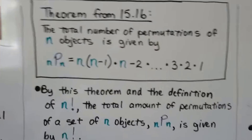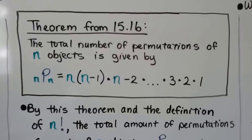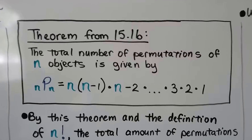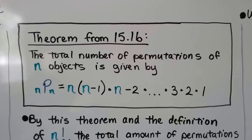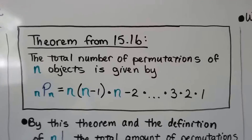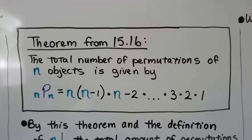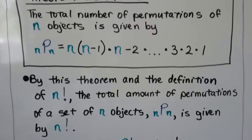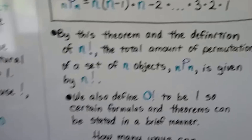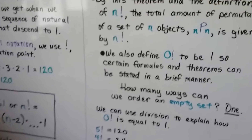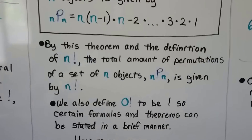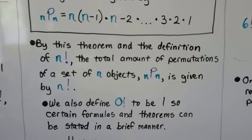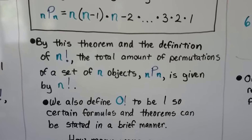Here's our theorem from the previous video. The total number of permutations of n objects is given by nPn, which equals n times n minus 1 times n minus 2, and so on, 3, 2, 1. By this theorem and the definition of n factorial, the total amount of permutations of a set of n objects, nPn, is given by n factorial.